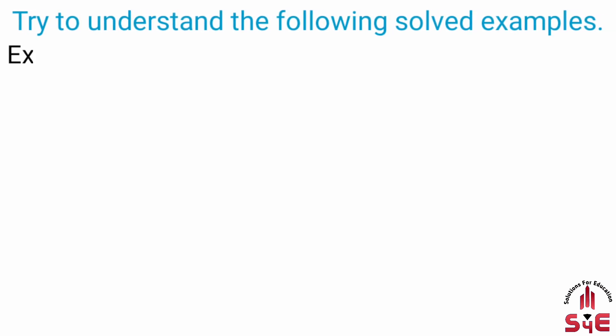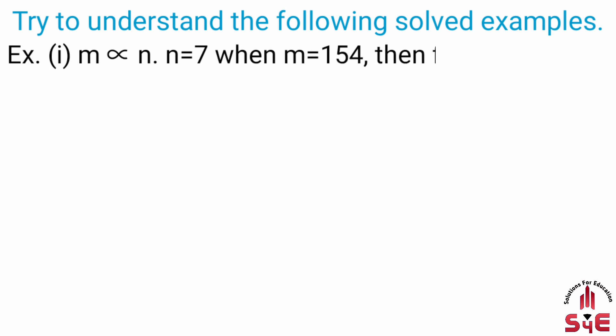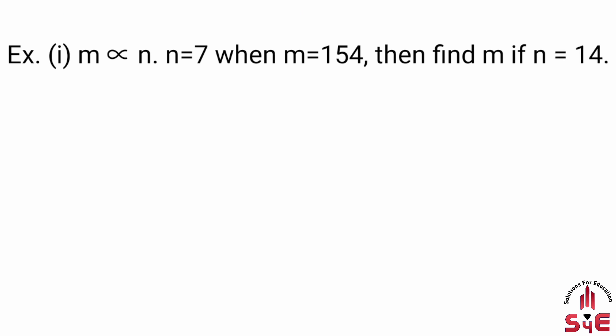Example 1: M varies directly to n. n is equal to 7 when m is equal to 154. Find m if n is equal to 14. Example 1 mein m, n ke direct variation mein hai. N = 7 diya hai, m = 154 hai.